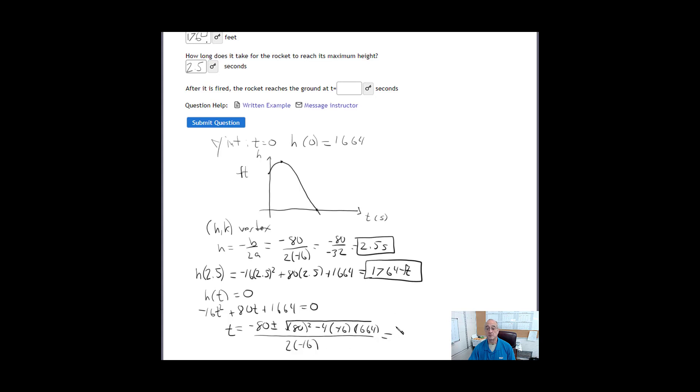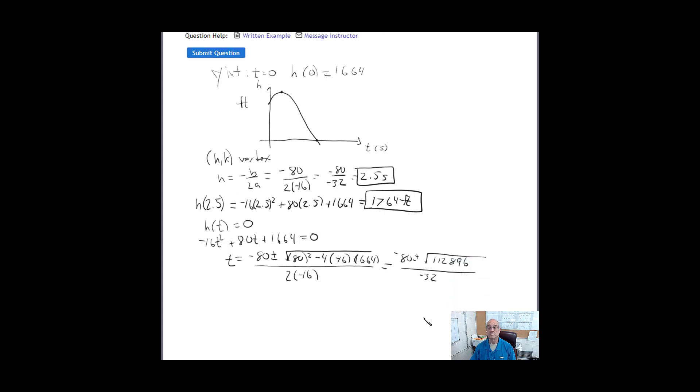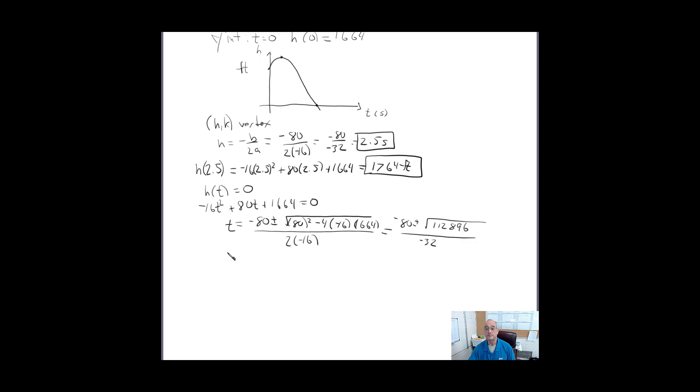So if we crunch the numbers here, we get negative 80 plus or minus the square root, this was a big number here, 112,896, all over negative 32. Let me scroll down here a little bit. Alright, so we get equals negative 80 plus or minus, and the square root of that happens to be a nice number, 336, all over negative 32.